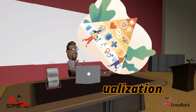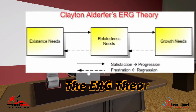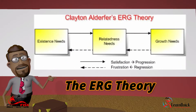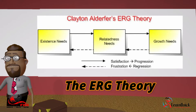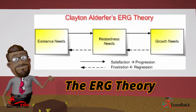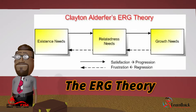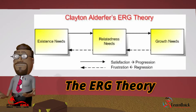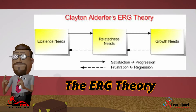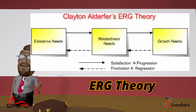Let us look at the theory called the ERG that classifies needs into three categories. The three categories are Growth Needs, Relatedness Needs, and Existence Needs. Aldo Farther, who discovered the ERG theory, found that one class of needs might remain stronger whether another class has been satisfied or not.